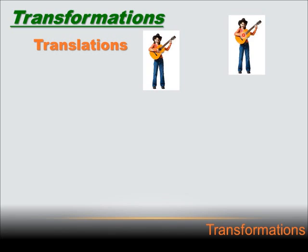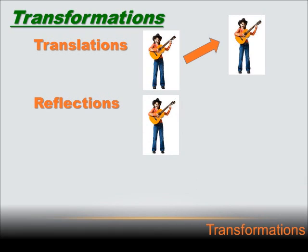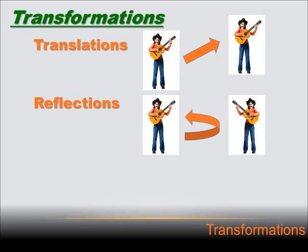The guitar is facing the same way, her body is the same size and shape — nothing changed, we just slid it over there. The second kind of transformation is a reflection. When you go into the bathroom and look in the mirror, you're seeing a reflection of yourself. What is on your right side appears on the left side in the mirror — it's turned around 180 degrees. We didn't change her size or shape; all we did was turn it around 180 degrees.